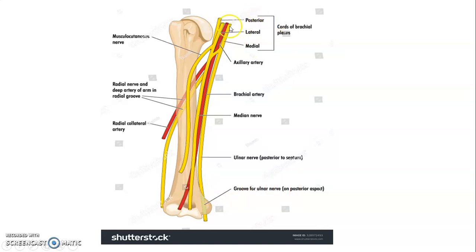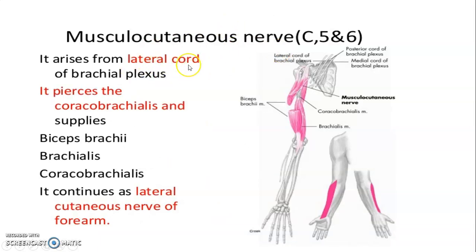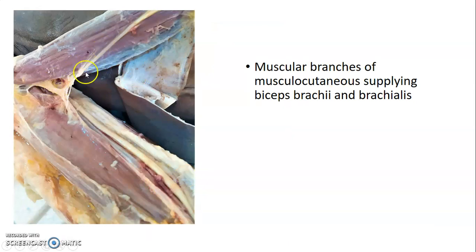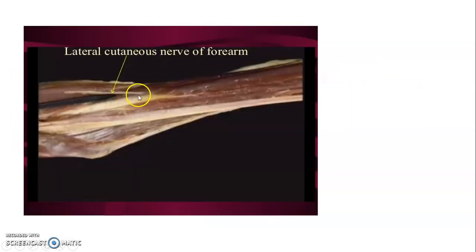The posterior cord of the brachial plexus is posterior to the axillary artery; the lateral cord is lateral, and the medial cord is medial. The musculocutaneous nerve comes from the lateral cord and usually pierces coracobrachialis. It supplies the muscles of the anterior compartment — biceps brachii, brachialis, and coracobrachialis — then terminates as the lateral cutaneous nerve of the forearm.